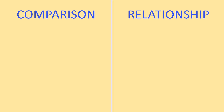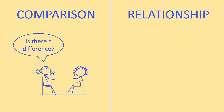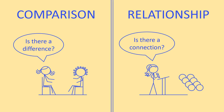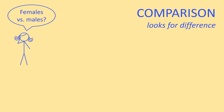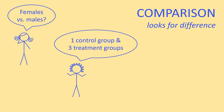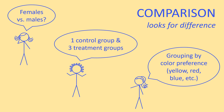There are two main features of your experiment to consider. The first is: what's the purpose of your research question? There are two major purposes you could have. The first is comparison, and the other is relationship. Comparisons try to understand whether there's a difference between the groups. Examples of comparison could be males versus females, control groups versus treatment groups, or grouping individuals by color preference. In every single example, we have at least two groups, and we're trying to find a difference.